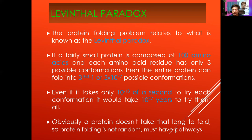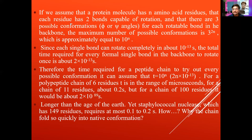Obviously this process cannot take the astronomically long time predicted. To calculate it properly: assume a protein has n amino acids, each residue has two bonds capable of rotation (phi and psi), and there are three possible conformations per bond. The maximum number of possible conformations is 3^(2n), approximately 10^n. Since each bond can rotate in about 10^-13 seconds, the total time required for a peptide chain to try every possible conformation is t = 10^n × 2n × 10^-13 seconds.